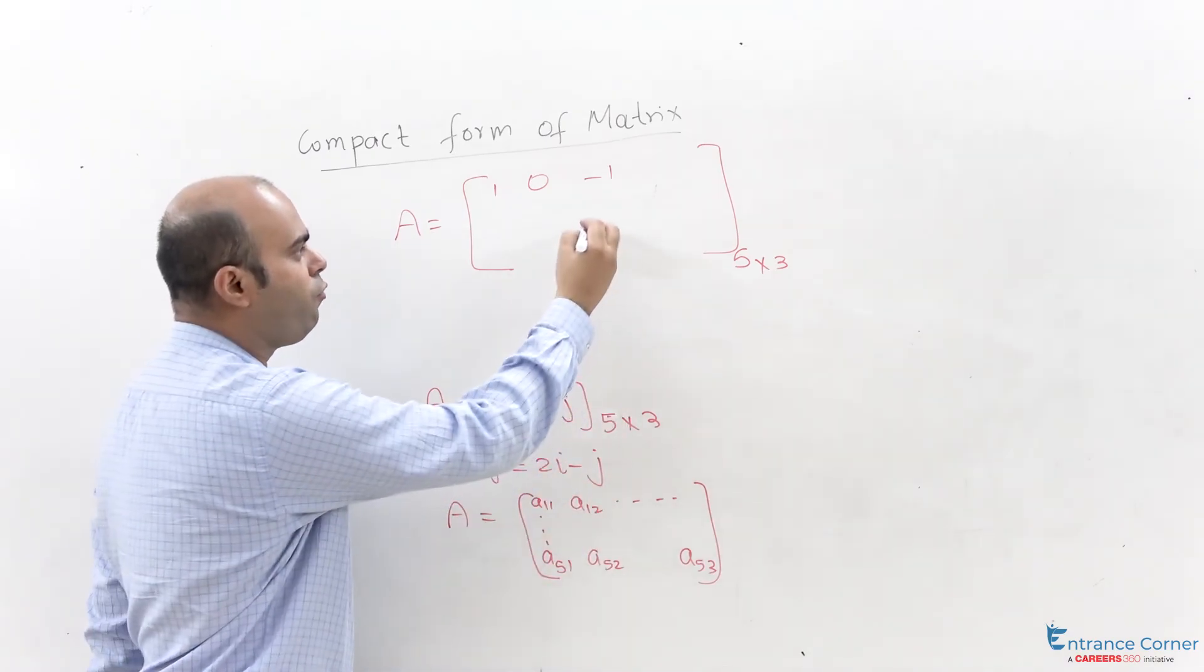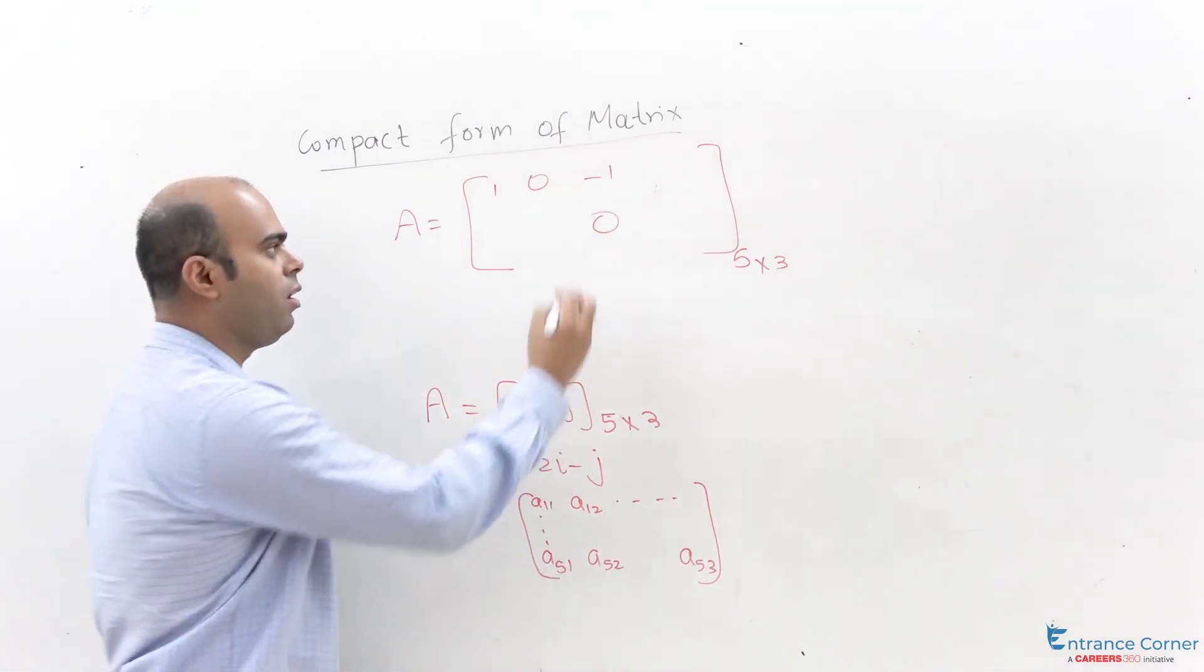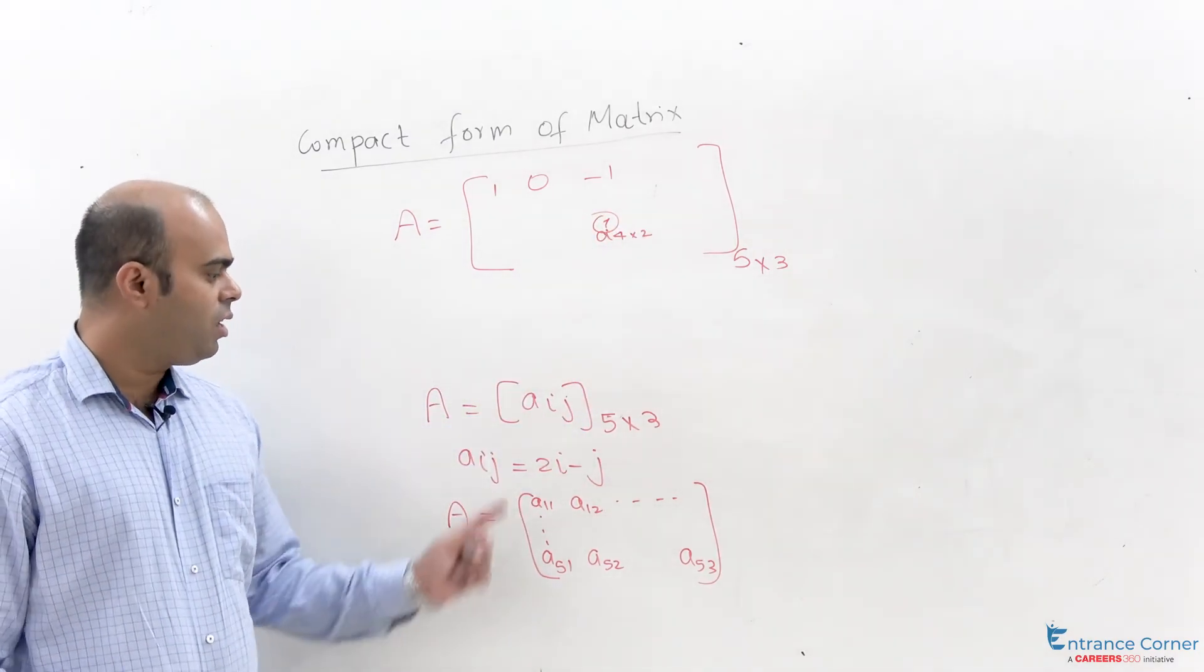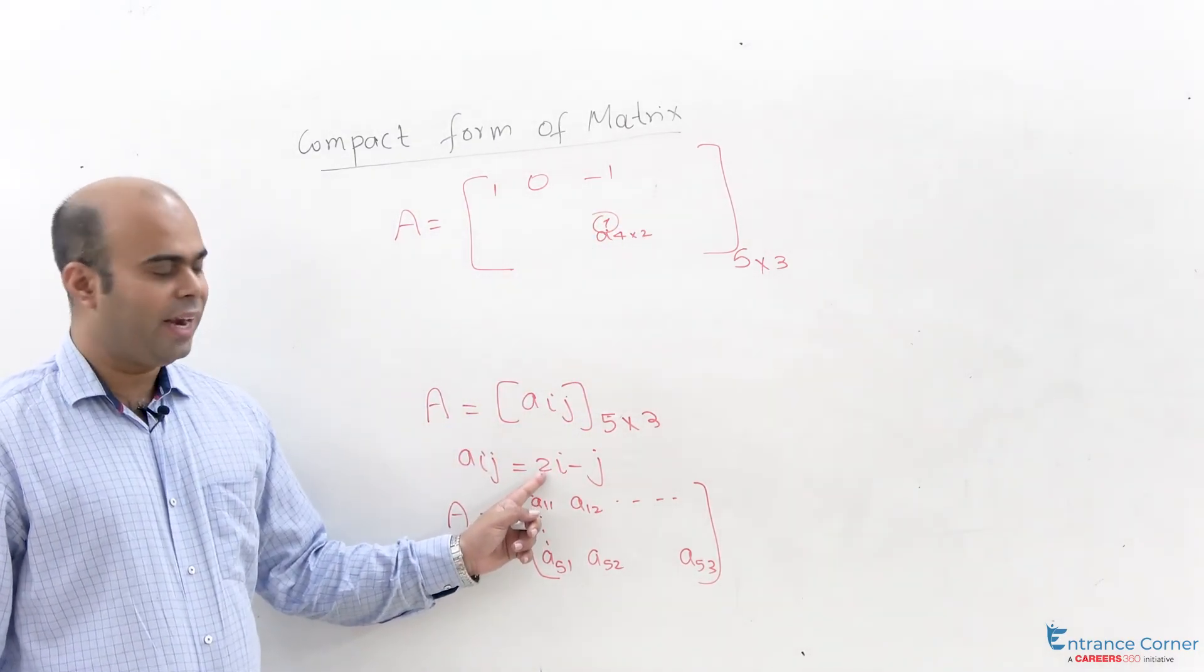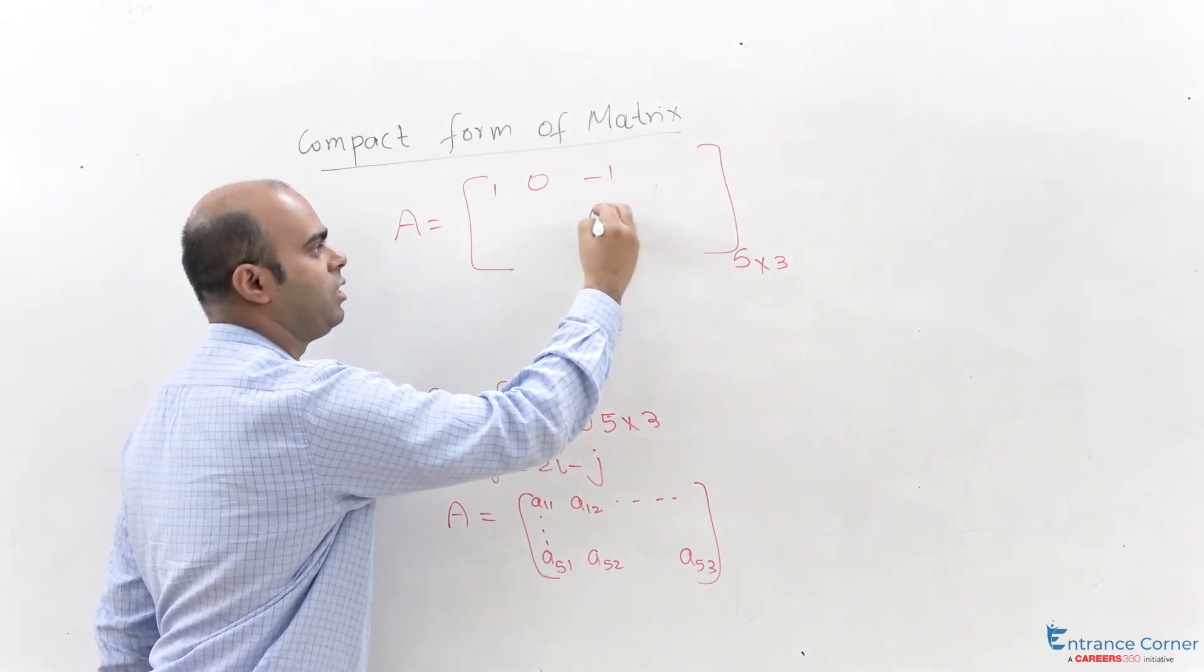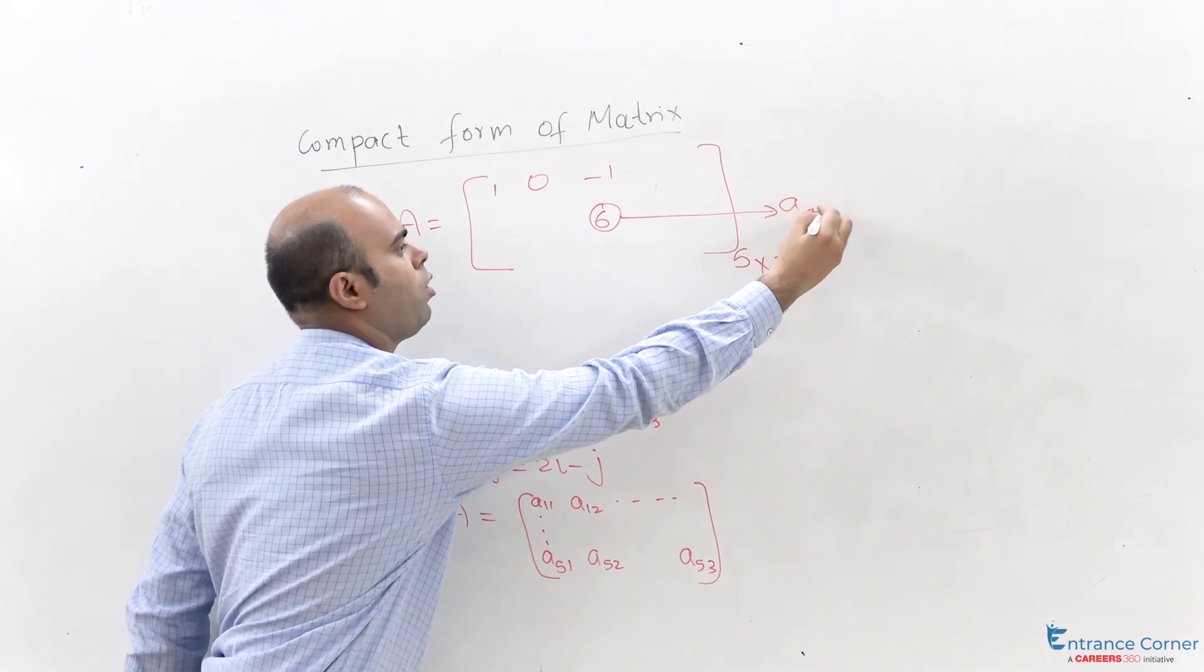If you want to find 4 cross 2, there is an element here. This is 4 cross 2 position of A. So we say 4 into 2, 8 minus 2 equals 6. So this can be replaced by an element 6. This is actually a42.